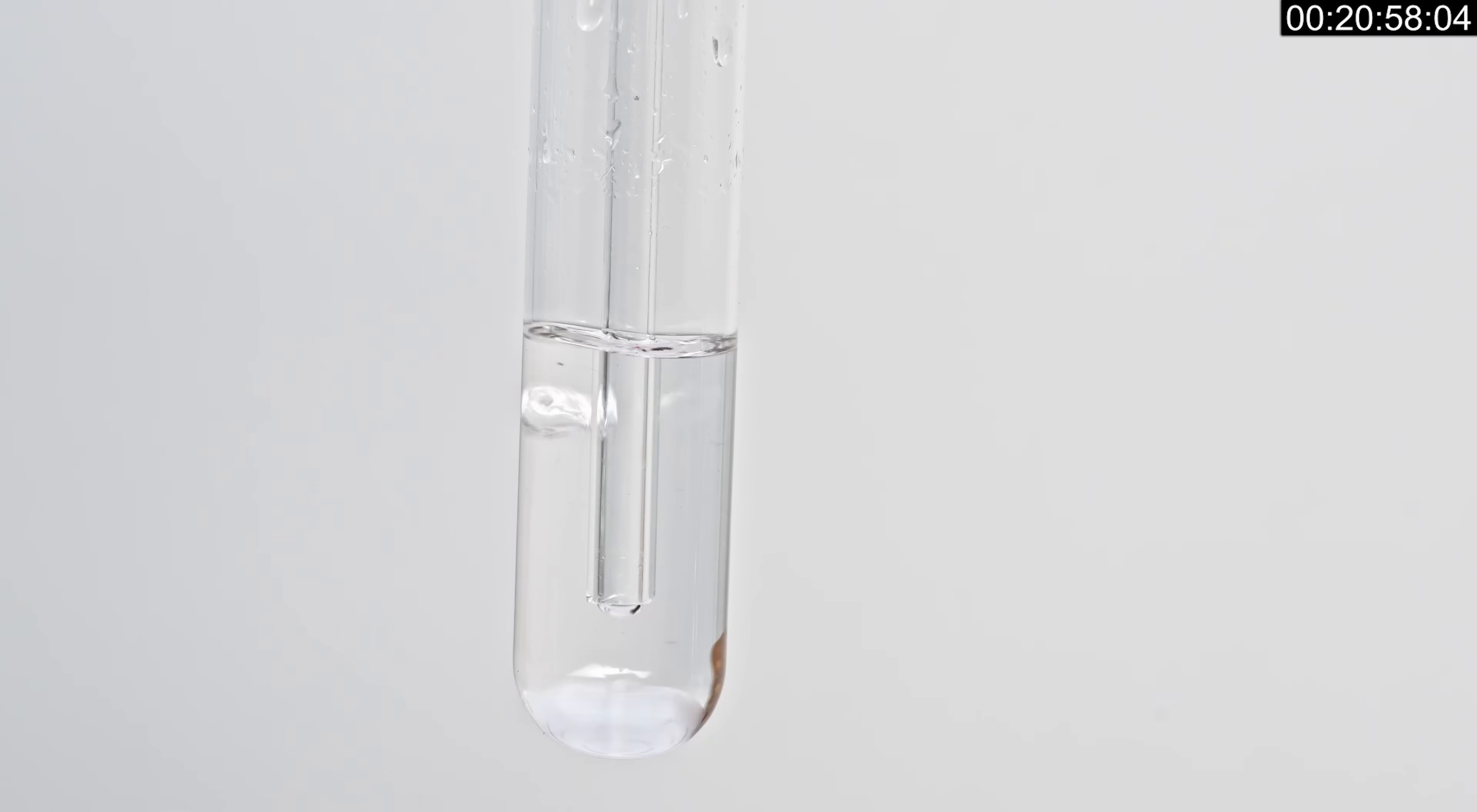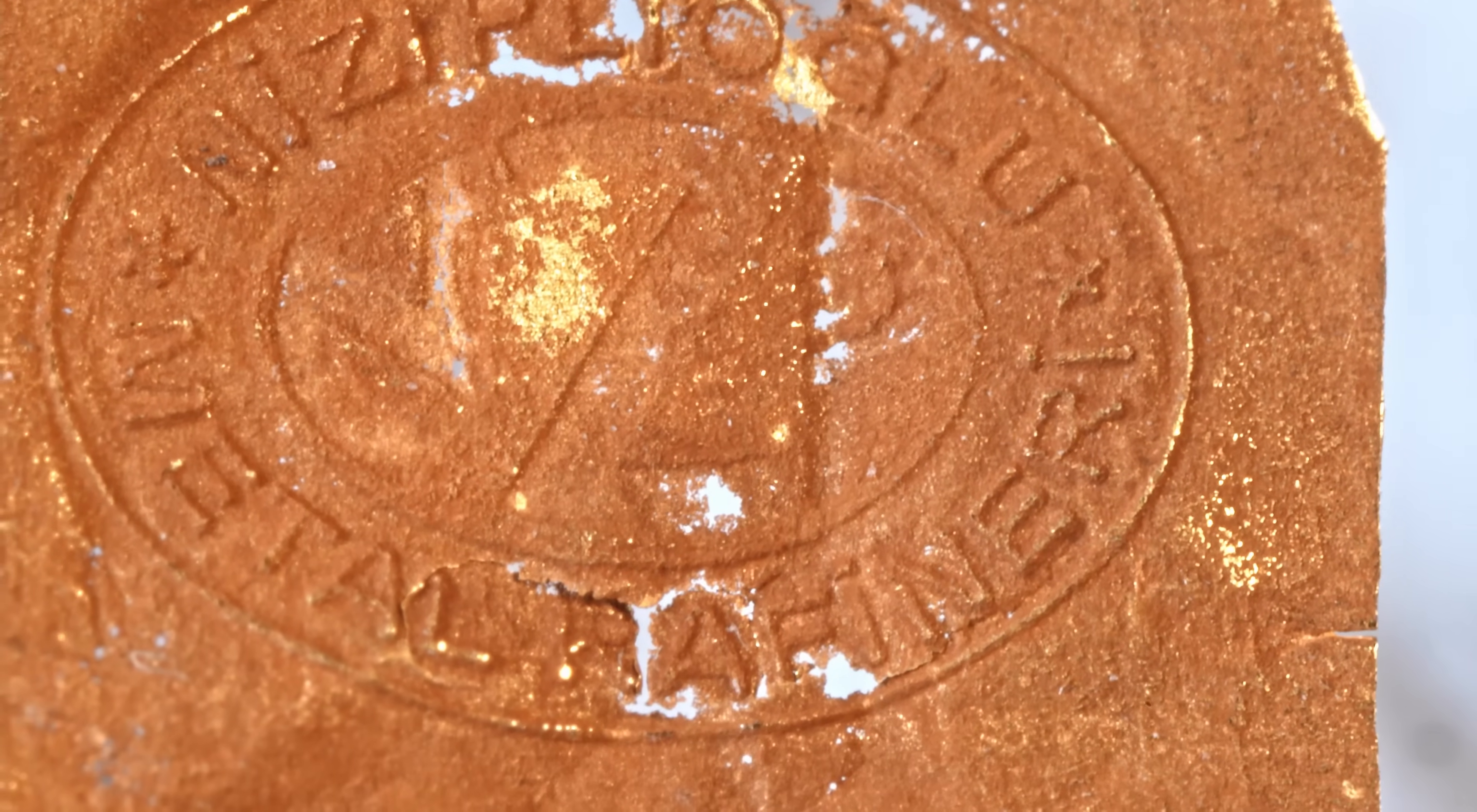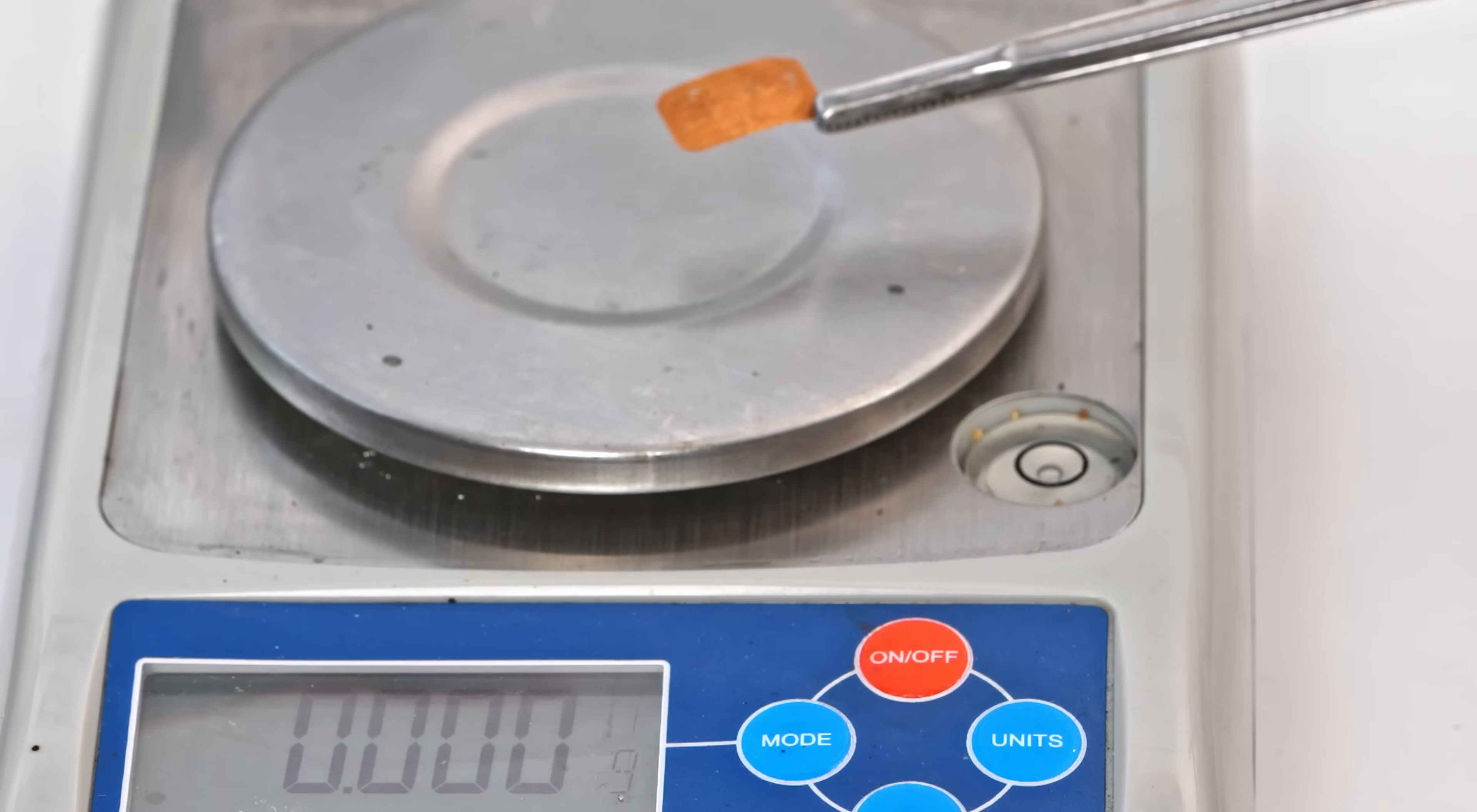I replaced the cyanide solution with a fresh one, and again dissolved the gold for more than an hour. This time, after removing the ingot, you can clearly see that in some places the gold has dissolved and micro holes have formed. I'm sure that this is a good sign that the ingot has been lost in mass, and indeed, on the scales we see less than one third of the initial mass of the ingot.